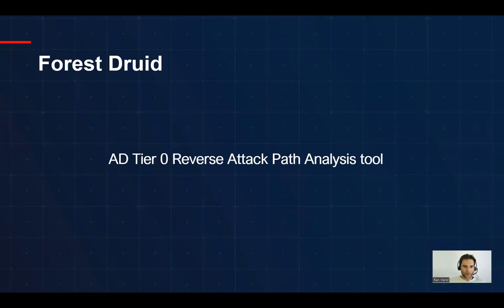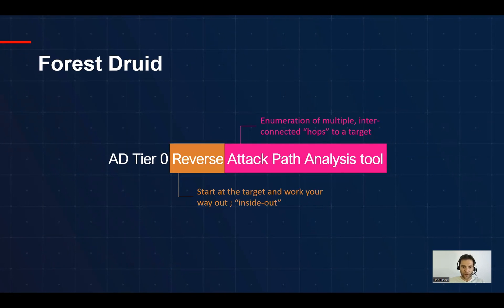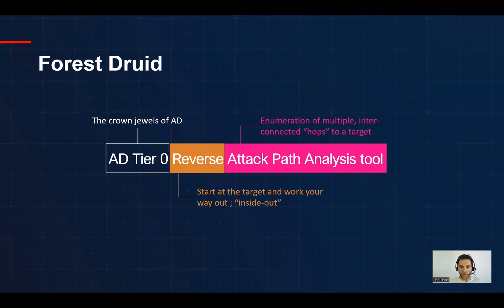AORUS DROID, also known as Forest Druid, is Sempera's free tool for AD Tier 0 reverse attack path analysis. It's an attack path analysis tool because it enumerates multiple interconnected hops to a target. It's a reverse attack path analysis tool because it starts at the target and works its way out — what we call the inside-out approach — focusing on AD Tier 0, the crown jewels of AD often targeted by ransomware.